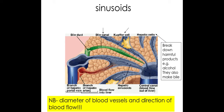There's also a bile duct present here and, as you can see, it flows in the opposite direction to the blood supply. You can identify the bile duct because it flows in the opposite direction to the blood supply in the sinusoid.